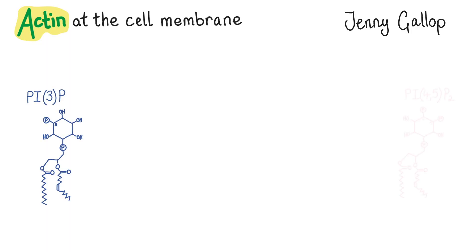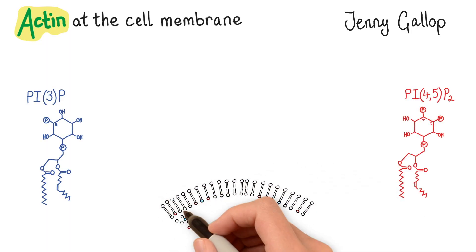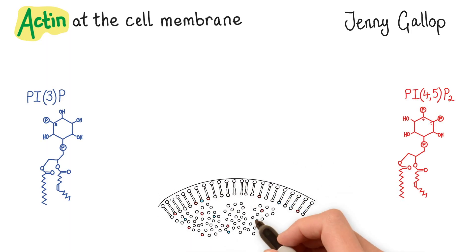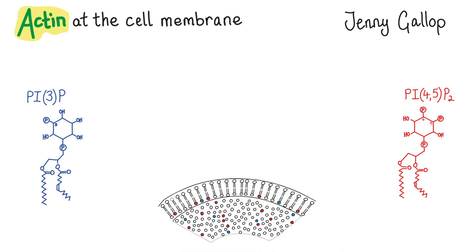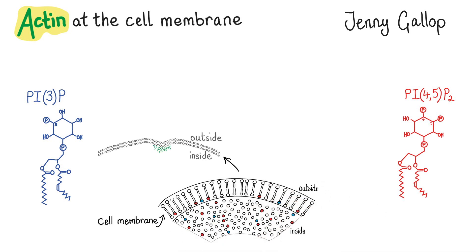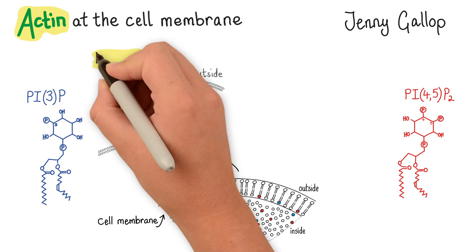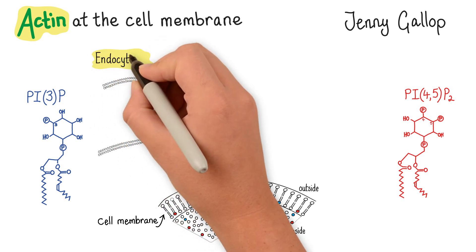We found that there are two lipid signals called phosphoinositides that occur together within a curved membrane surface. This curved membrane surface happens when cells need to take things up in a process called endocytosis.